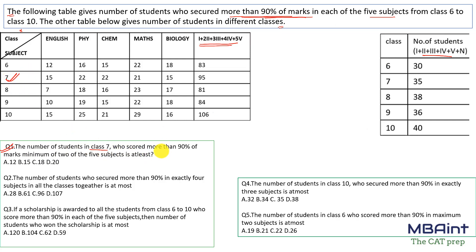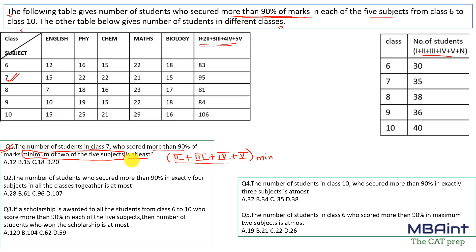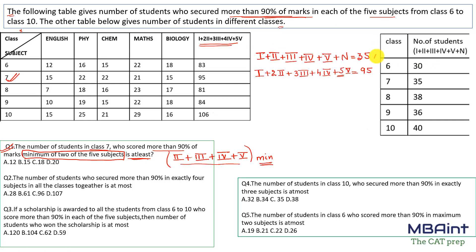Question 1: The number of students in class 7 who scored more than 90 percent marks in a minimum of two of the five subjects is at least — so we need to minimize (exactly 2 + exactly 3 + exactly 4 + exactly 5). The phrase 'at least' tells us we must minimize this sum.